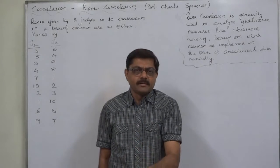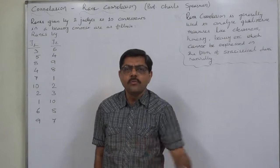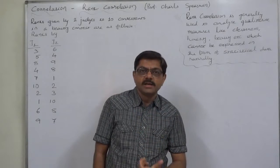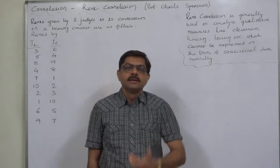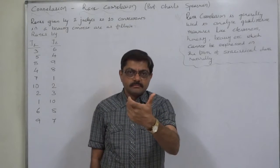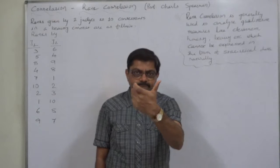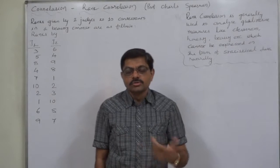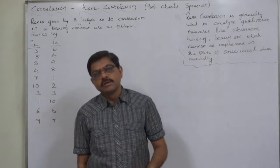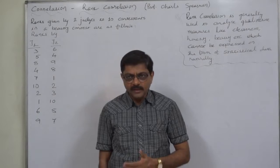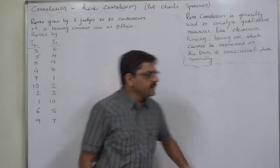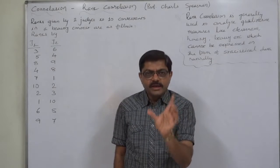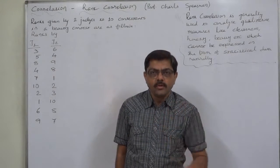And now say we want to compare the approach of two or more judges toward judging beauty. That means we want to study the correlation between the judgments of two or more judges. How can we? Because to study the correlation ultimately we should have some statistics. In this kind of cases, Professor Charles Spearman suggested the method of studying correlation through rank correlation.